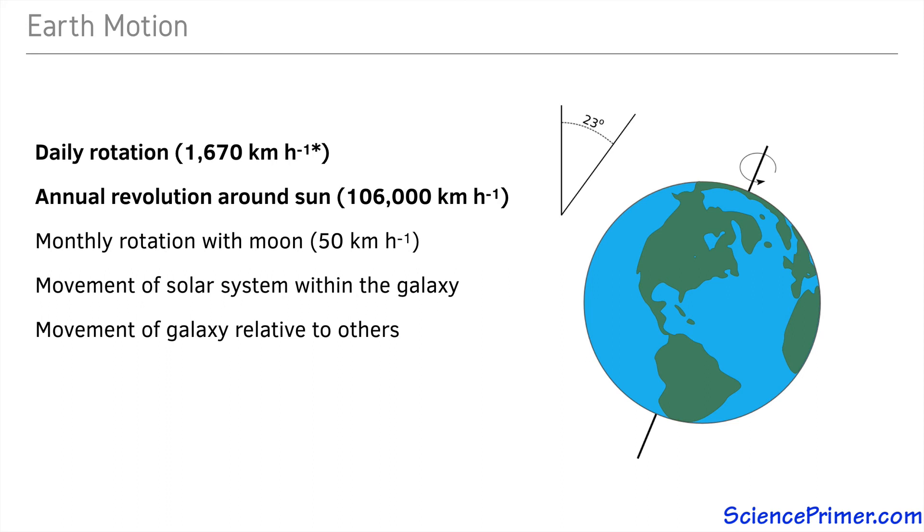But it is the first two, our daily rotation around our own axis and our annual orbit of the sun, that dominate patterns of energy flow from the sun to the Earth. The dominant patterns are daily cycles, changes over the annual cycle, and changes with latitude.